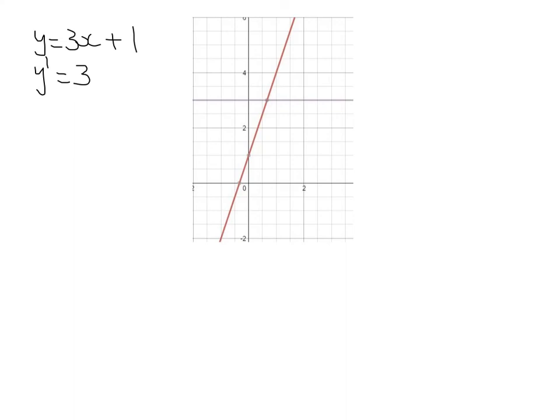So the derivative function has a y dash value, y value, of 3. And that makes sense because if you think about the gradients along this line, they're all at the same, because it's a constant line, then it's a constant derivative the whole way.